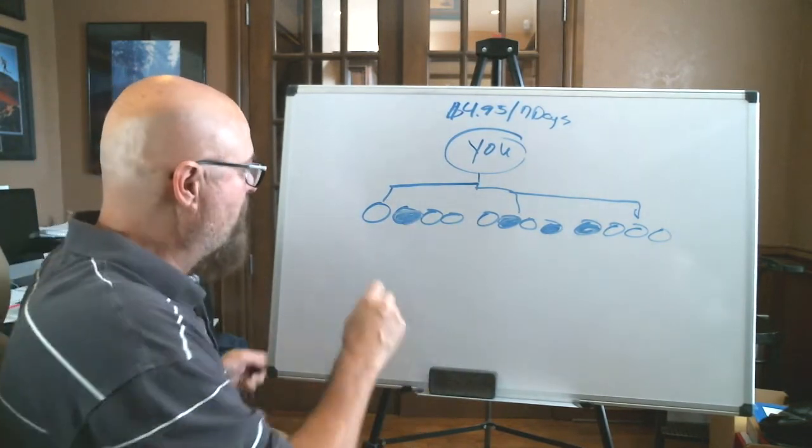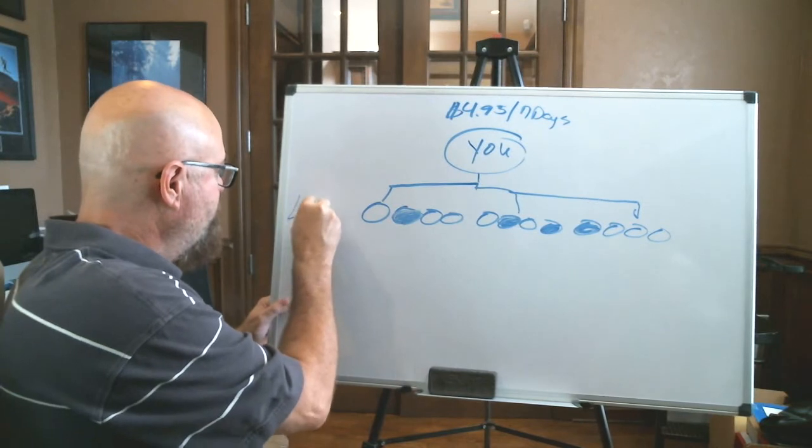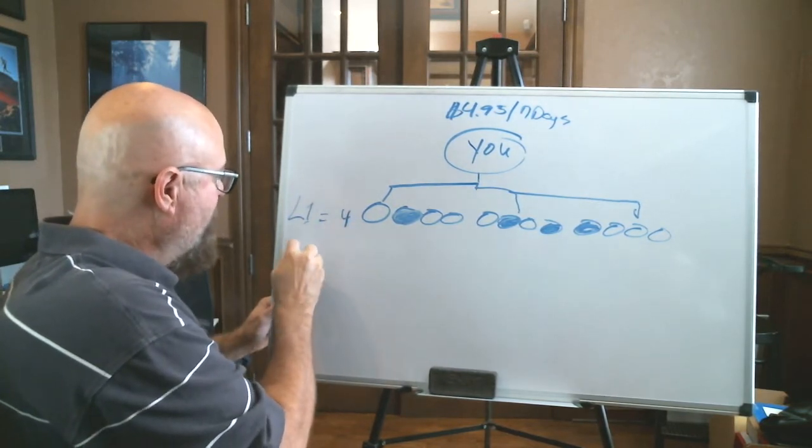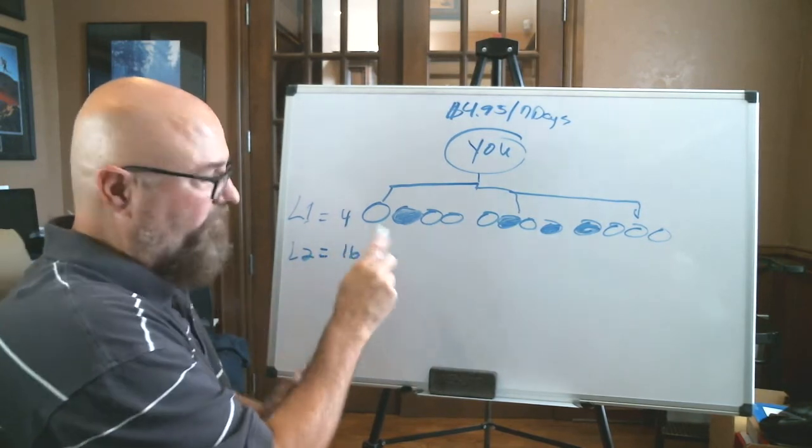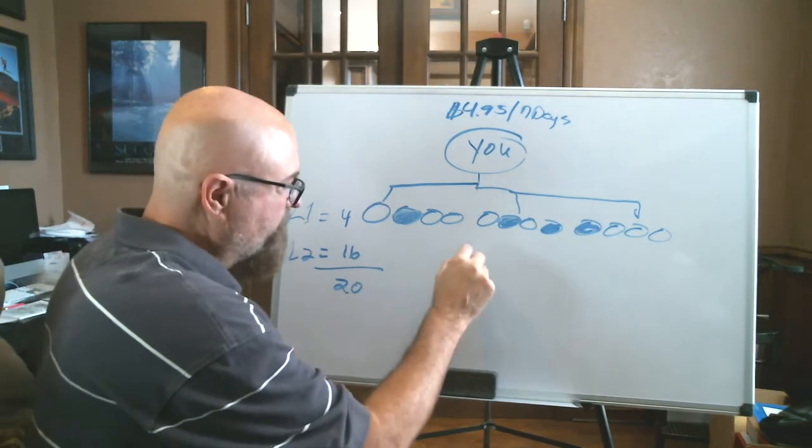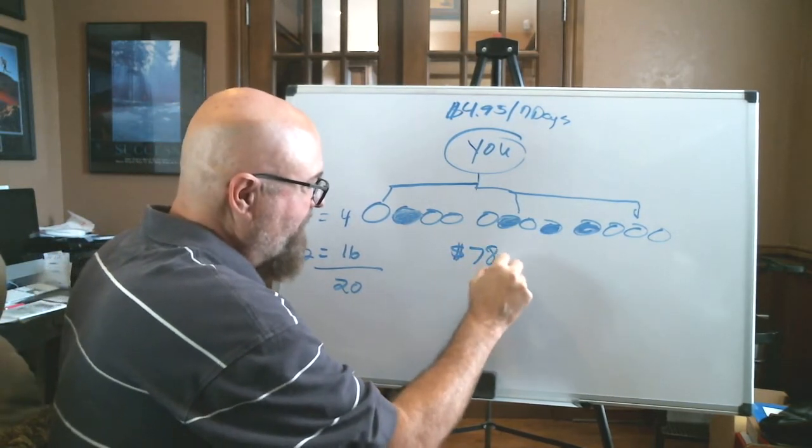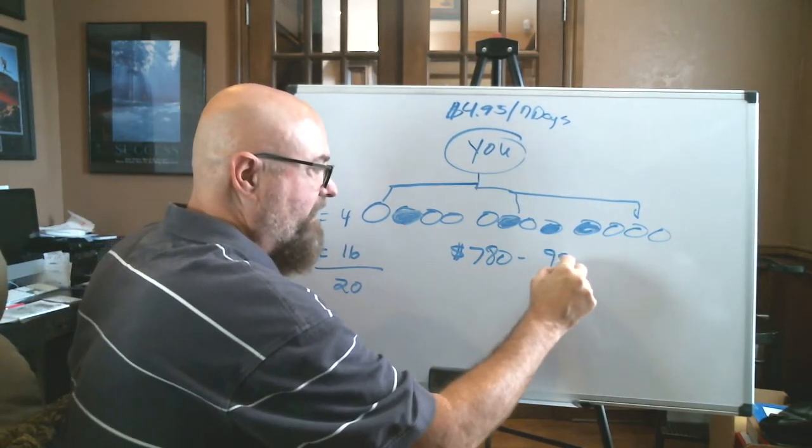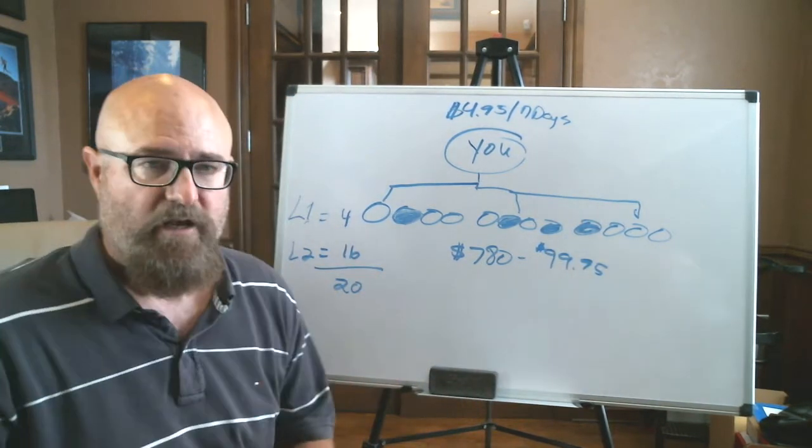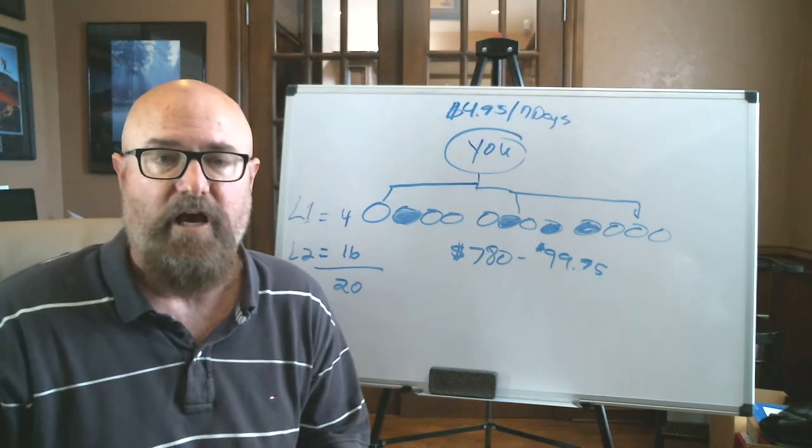So when you go out and you're going to find 12 people, you're going to find four. That's on level one. And our goal on level two is to duplicate four who get four. That's what we call a group of 20 people. And it's $780 if they're all on a $99.95 purchase, which is about our average purchase.